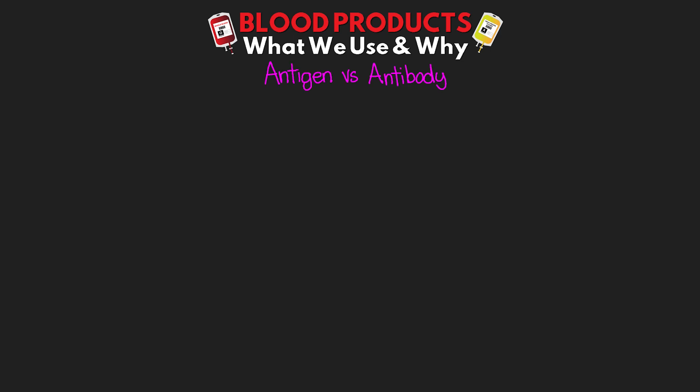In order to understand why blood types matter, let's do a super quick review of what they actually mean. To do so, we have to talk about our antigens and antibodies. On the surface of red blood cells, there are specific blood group antigens. The two most important ones are going to be our ABO and our RHD antigens.